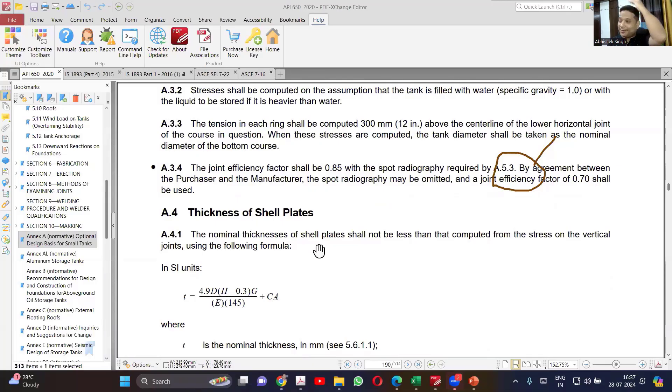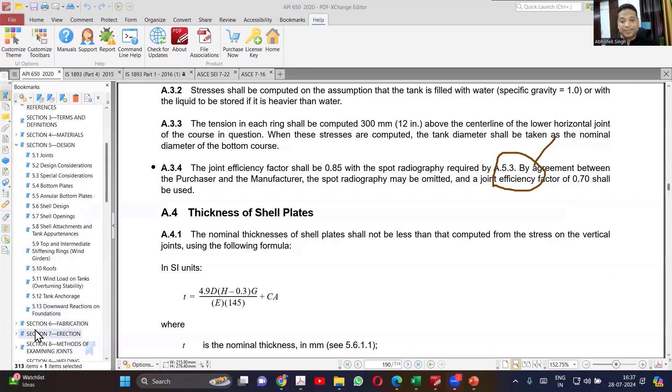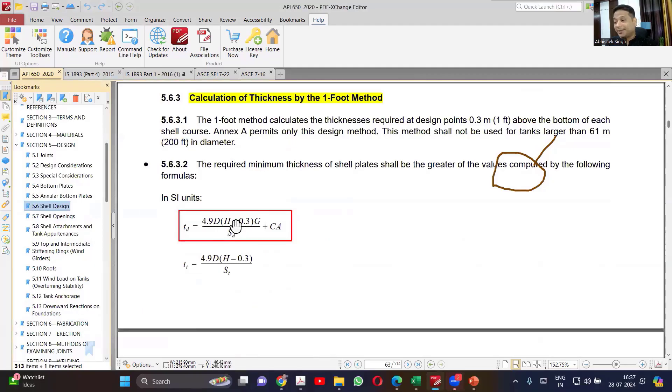Then how you are taking care of that? How the strength of weld is considered? If you are not considering joint efficiency in the design formula which we have used for the shell design, there is no joint efficiency. So how we are taking care of the joint efficiency? Basically you are saying that full RT will become applicable.